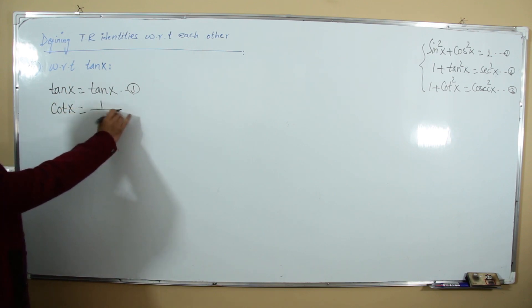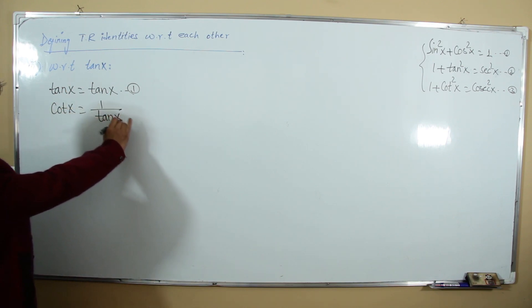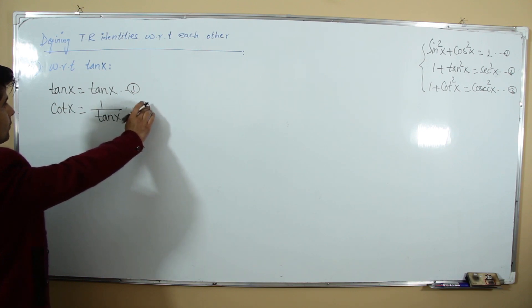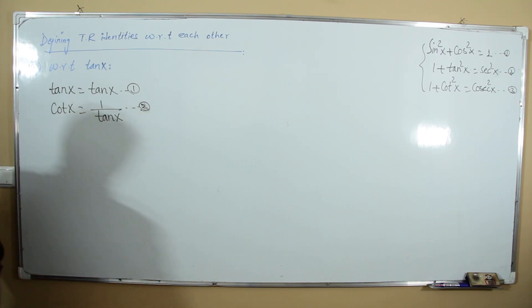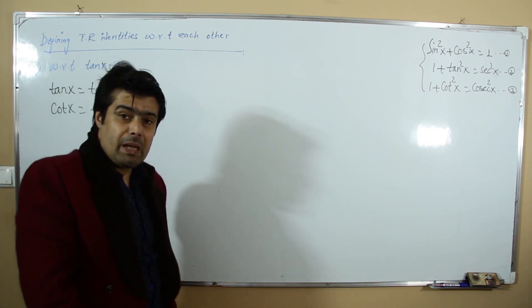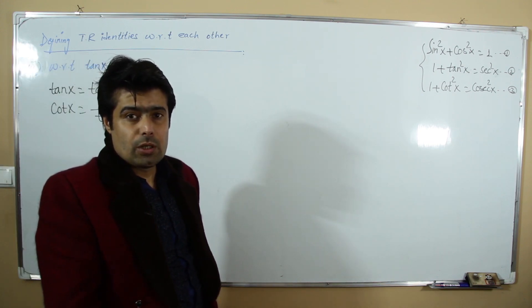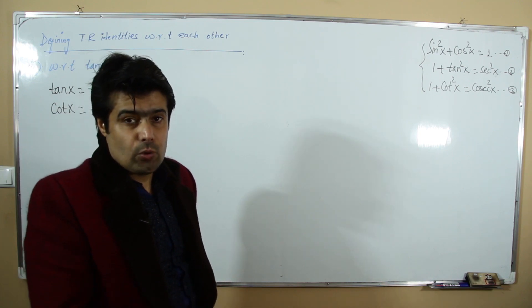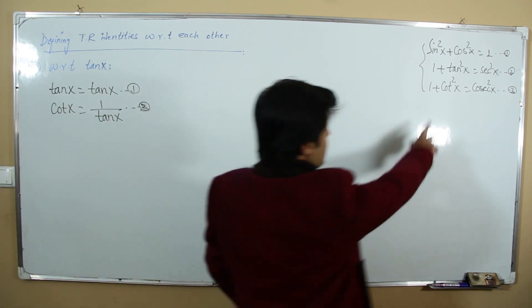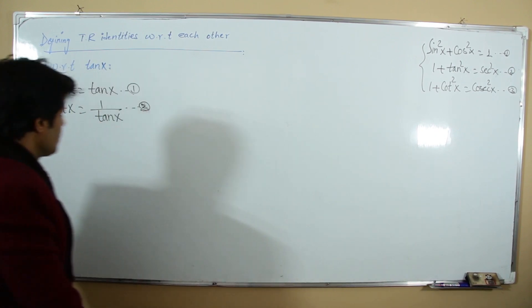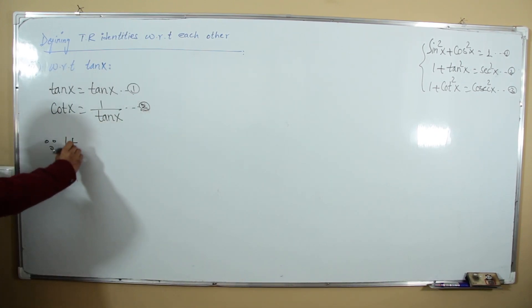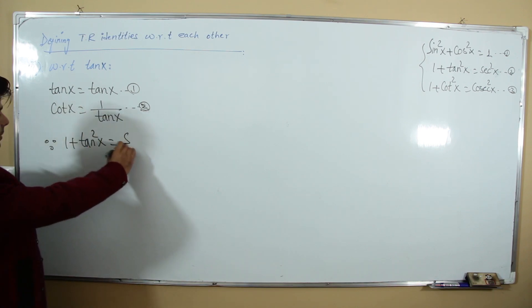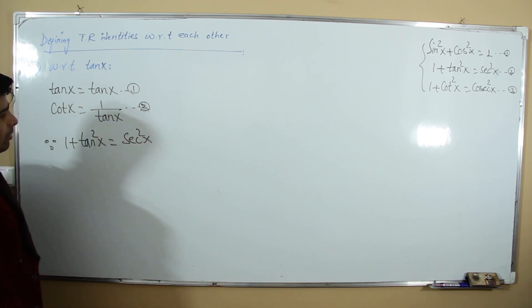Cotangent is related to tangent: cotangent = 1/tangent. This is our second relation. Now use the identity 1 + tan²x = sec²x.